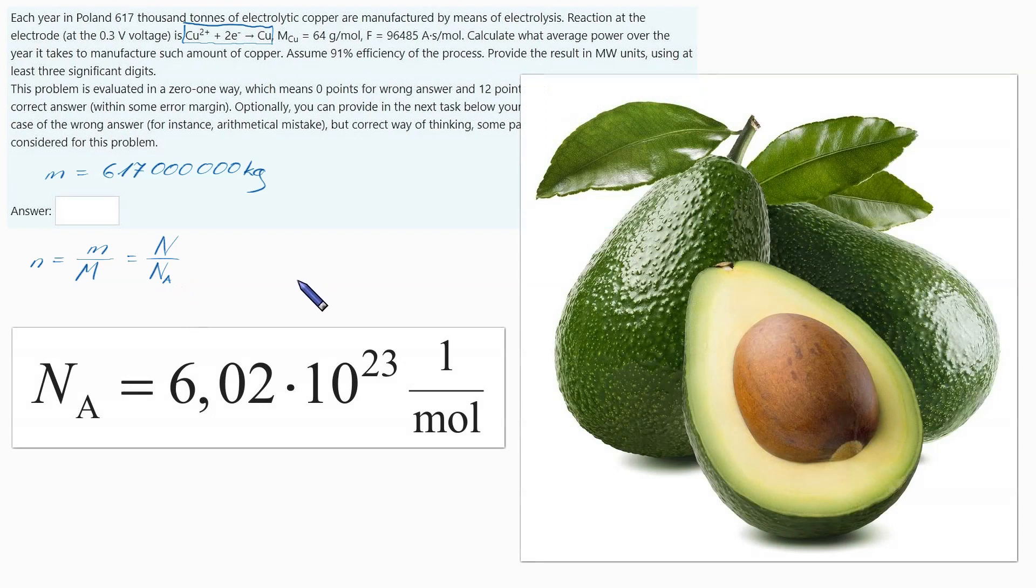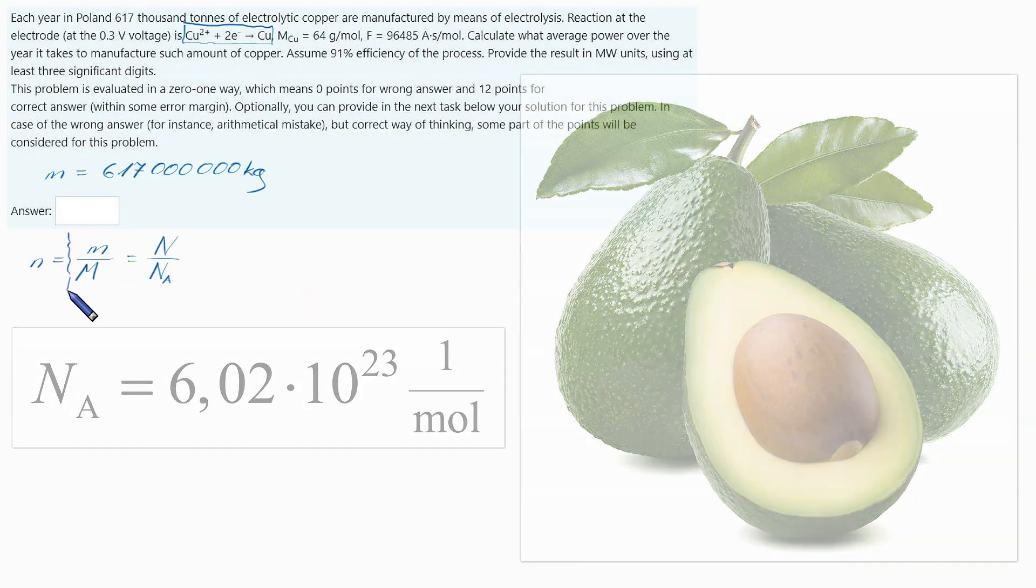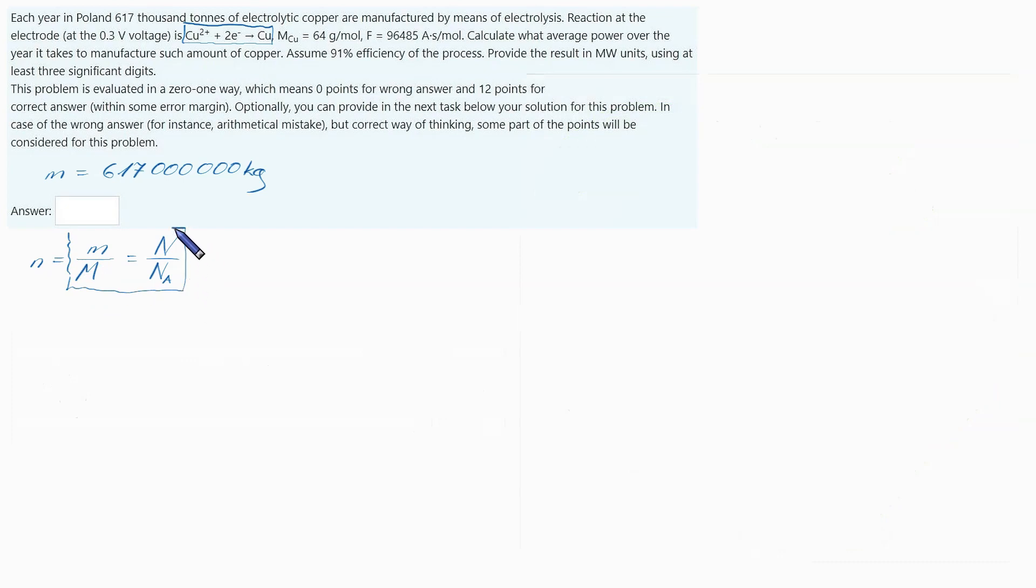Since I'm not really interested in number of moles, I will focus on this part. This gives me a formula for number of atoms: number of atoms of copper equals mass times Avogadro number over mass of one mole. All of this on the right side is given, so n is now given.